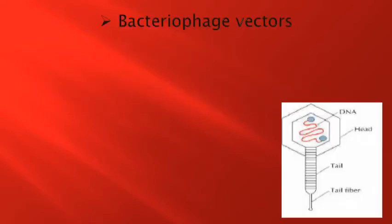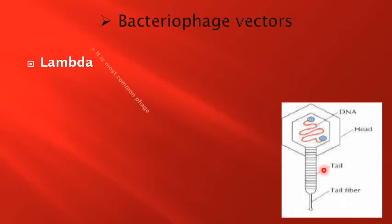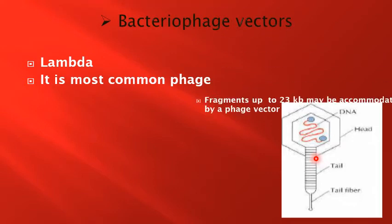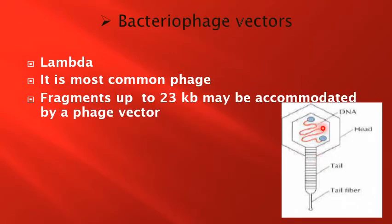The other type of vector is called the bacteriophage vector. An example is the Lambda vector, which is the most common phage. Fragments up to 23 kilobases (KBs) may be accommodated by the phage vector.